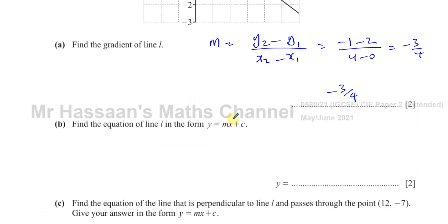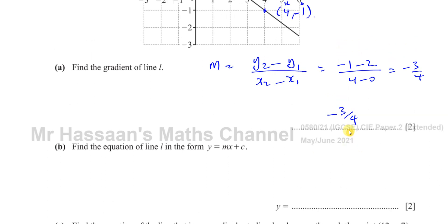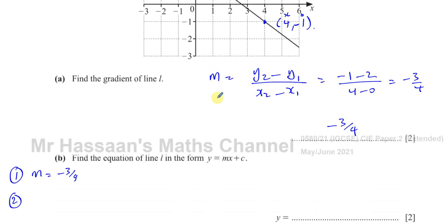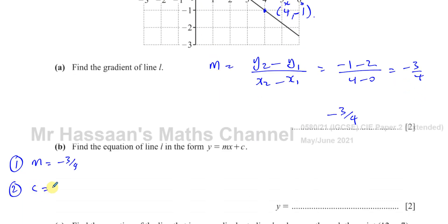Part B says, find the equation of line L in the form Y equals MX plus C. The equation of a line is given by Y equals MX plus C. So we need two things. We need to have the gradient of the line, which we have, minus 3 quarters. And we need to have any point on the line. Now, if we know the Y intercept, then that's even better because we can just put straight away this value here because the C stands for the place where the line crosses the Y axis. In this case, we can see the Y intercept is (0, 2). So we can see that the value of C is equal to 2.